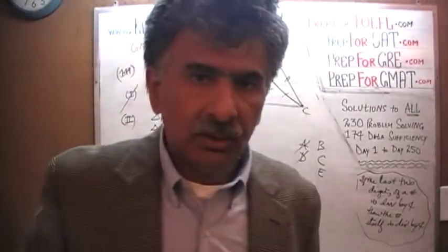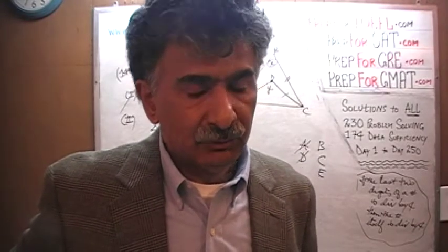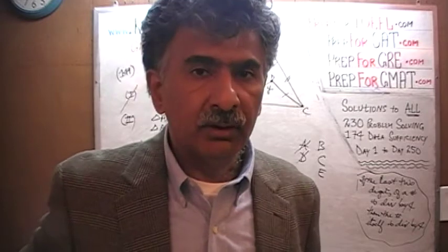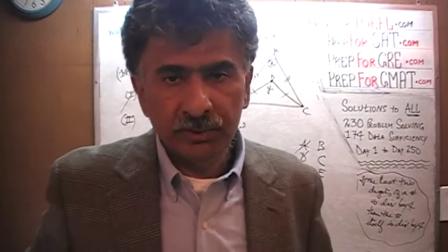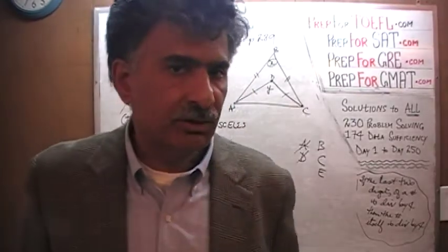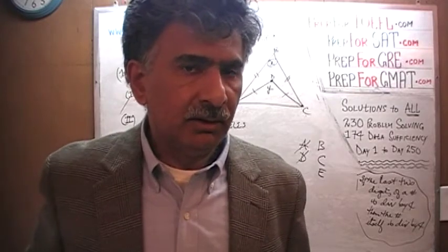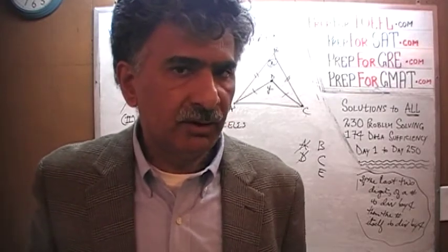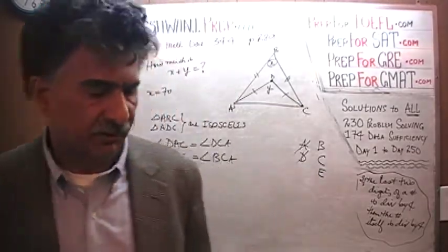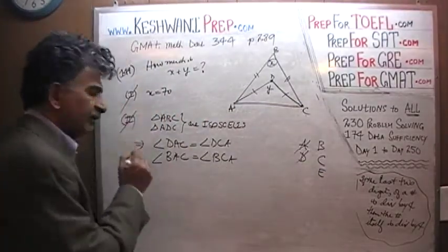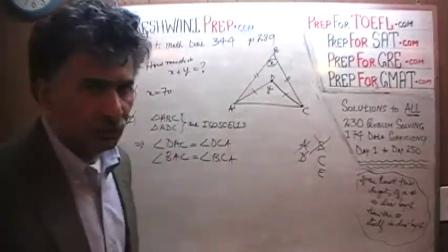If somebody came up to you and told you they have an isosceles triangle where the two angles are equal, and asked you for the third angle — it could be anything. Maybe the two equal angles are 10 degrees each, making the remaining angle 160. Or maybe they're 50 each. There are infinite possibilities. The second statement by itself is also not enough. Let's put the two statements together.